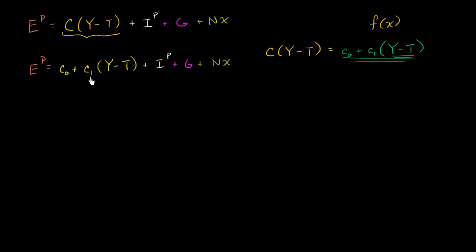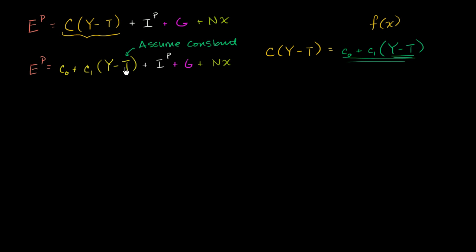We can simplify this a little bit to make clear what parts are constant and what parts are a function of income. For the sake of this analysis, we can have a debate whether taxes should be a function of income or not — in the real world taxes really are a function of income — but we'll assume that like planned investment, government spending, and net exports, taxes are constant. So we can distribute the marginal propensity to consume c1.